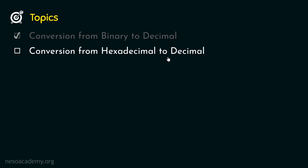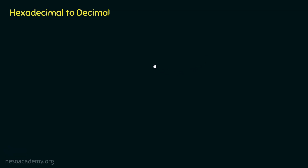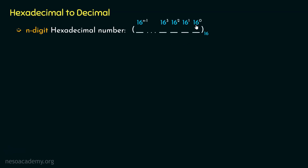Now let's learn about conversion from hexadecimal to decimal. Just as we had place values for an n-bit binary number, for an n-digit hexadecimal number the place values are: 16 raised to the power 0, 16 raised to the power 1, 16 squared, 16 cubed, up to 16 raised to the power n minus 1. The approach is the same as with binary — let me illustrate using the hexadecimal number 0110.